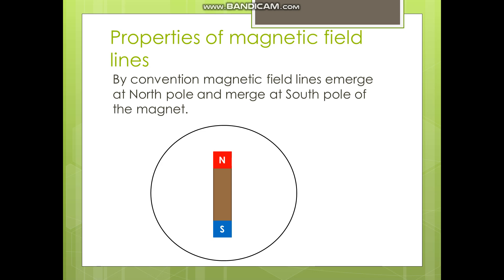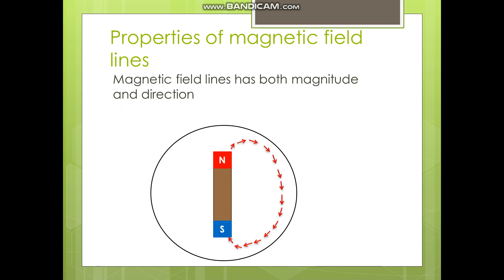There are some properties of magnetic field lines. By convention, magnetic field lines emerge at the north pole and merge at the south pole — they start at the north pole and end at the south pole. Second, magnetic field lines have both magnitude and direction. Direction is indicated by the arrowhead and magnitude is indicated by the length of the arrow. Therefore, magnetic field is a vector quantity.